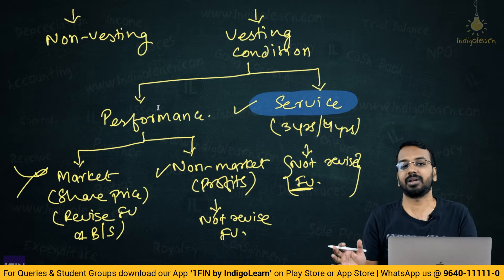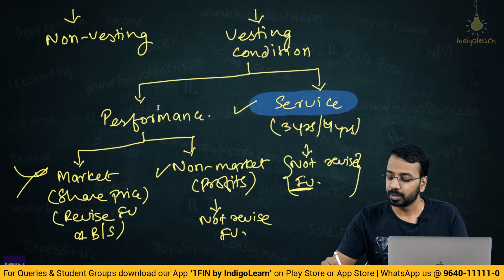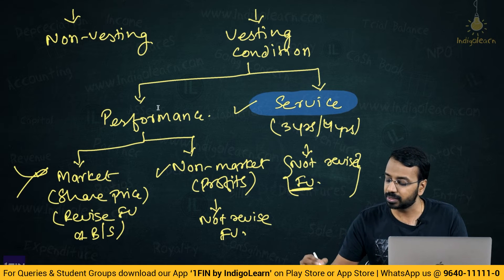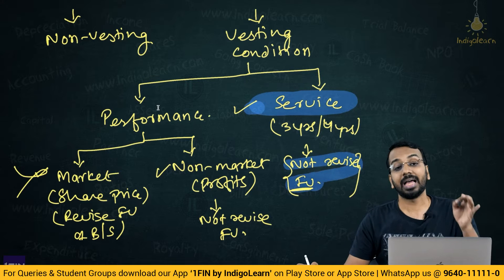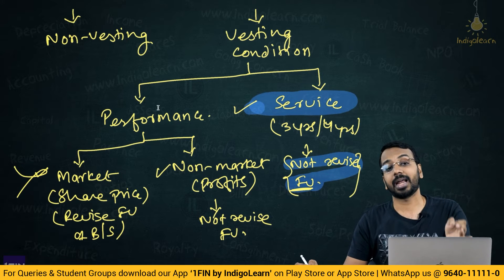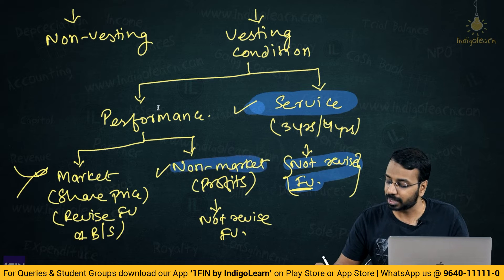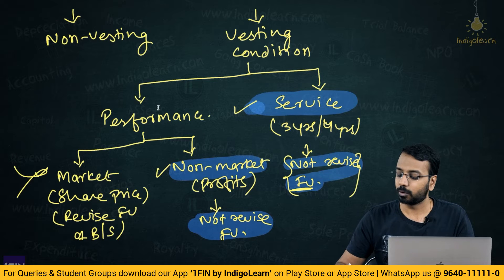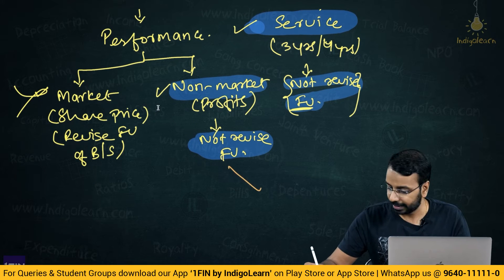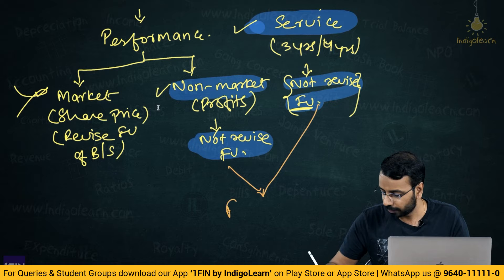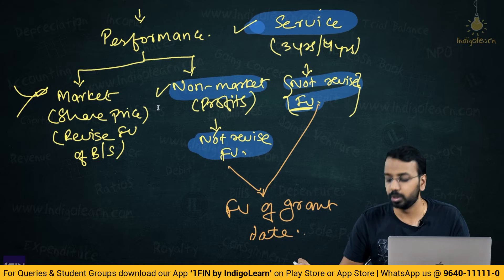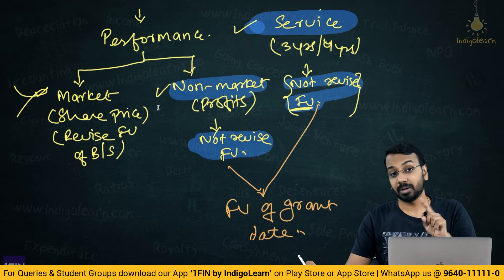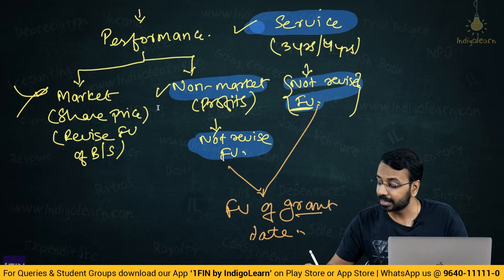To summarize: if it is a service condition, I will not revise the fair value — I take the fair value on the grant date. If it is a non-market-based condition, again I will not revise the fair value — I take the fair value on the grant date. In both of these situations, I take the fair value of the grant date only and will not revise the fair value subsequently.